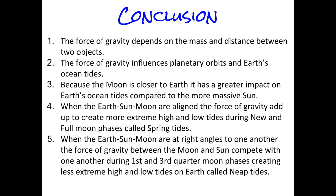In conclusion: the force of gravity depends on mass and distance between two objects such as the Earth, Sun, and Moon. Gravity influences planetary orbits and certainly influences Earth's ocean tides. Because the Moon is closer to Earth, it has a greater impact on Earth's ocean tides compared to the more massive Sun. When the Earth, Sun, and Moon are aligned in a straight line, gravity adds up and creates more extreme high and low tides during new and full Moon phases — called spring tides. When the Earth, Moon, and Sun are at right angles, the forces compete during quarter Moon phases, creating less extreme high and low tides — called neap tides.